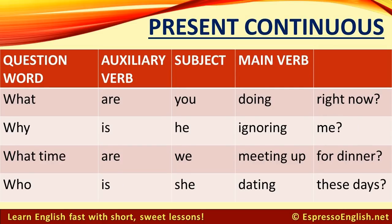To form questions in the present continuous, the auxiliary verb is 'is' or 'are,' and the main verb is in the -ing form. For example: What are you doing right now? Why is he ignoring me? What time are we meeting up for dinner? Who is she dating these days?